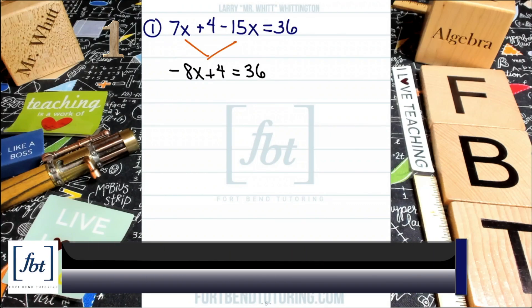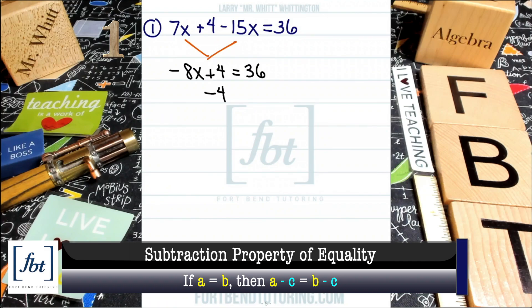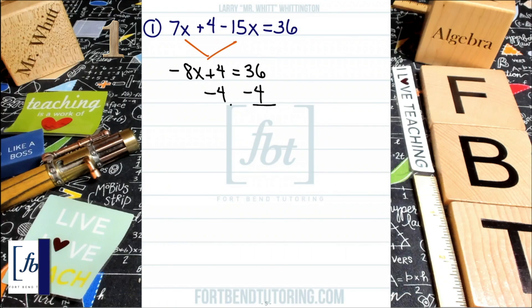How do you do that? The subtraction property of equality. Go ahead and subtract 4 to both sides of the equation, like so. Then we'll simplify.